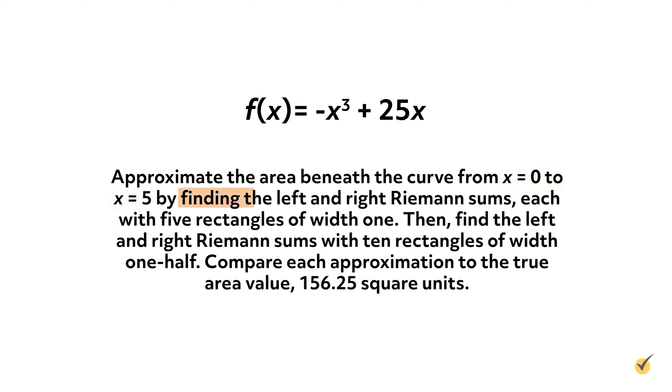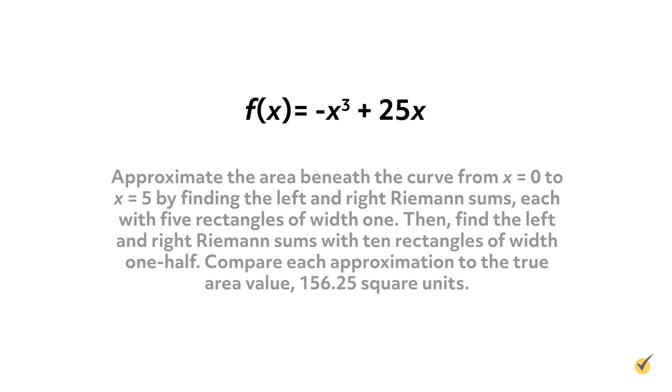Our first task is finding the left Riemann sum with 5 rectangles of width 1. This means that the left corners of each rectangle will lie on x = 0, x = 1, x = 2, x = 3, and x = 4, respectively. Even though we don't have a picture of the graph in front of us for this problem, we can calculate the heights of those rectangles by plugging those x-values into the function.